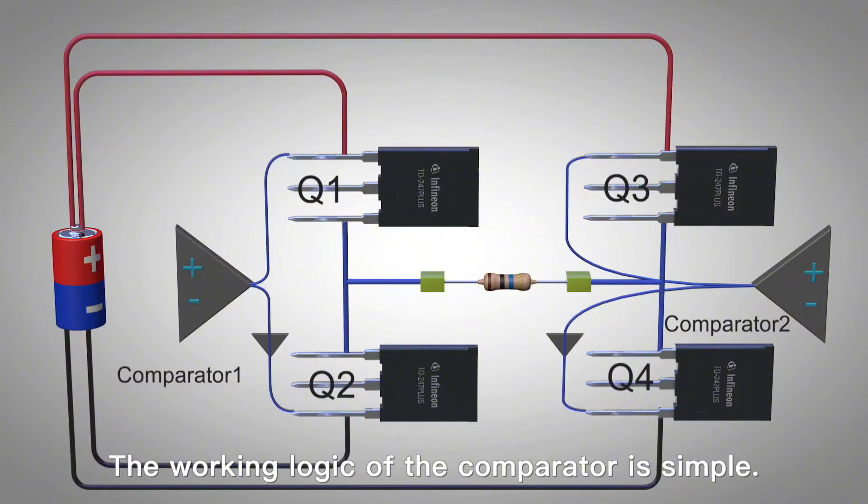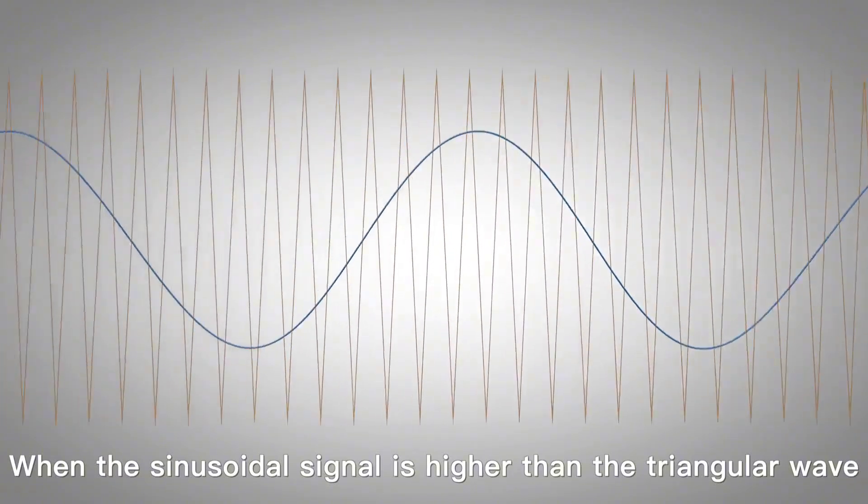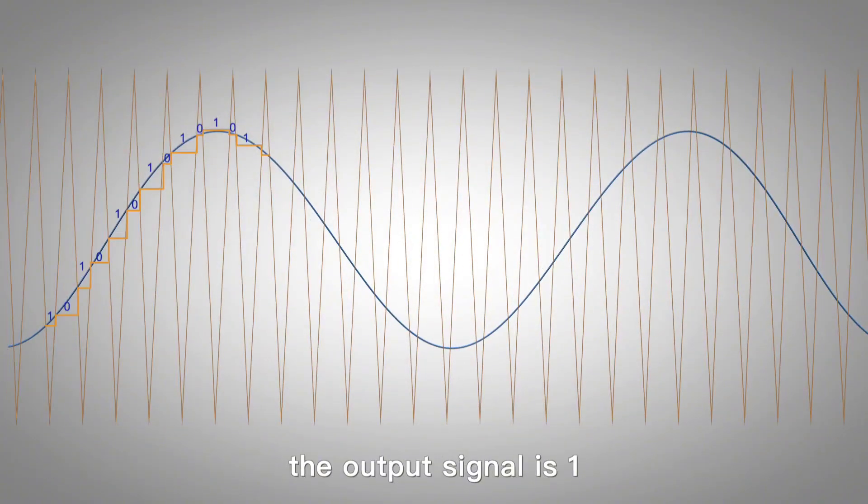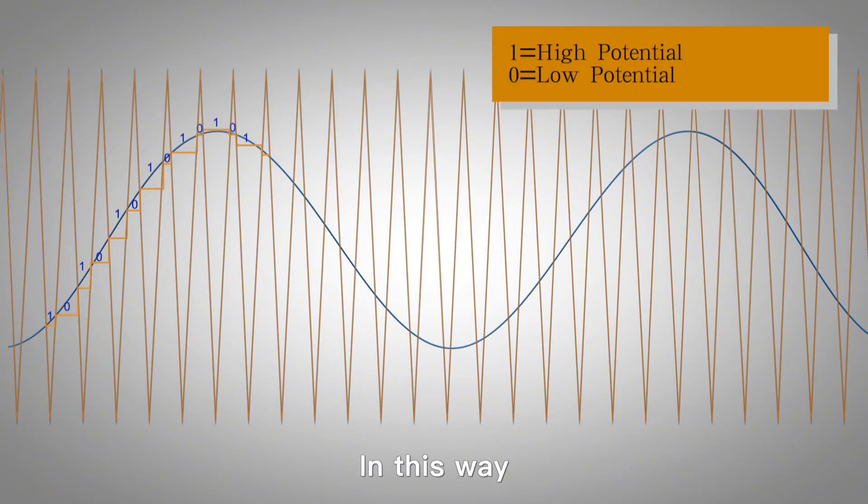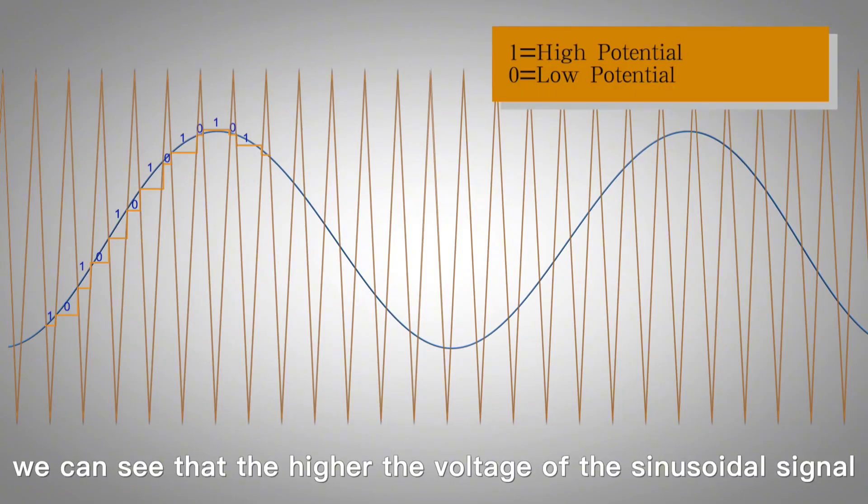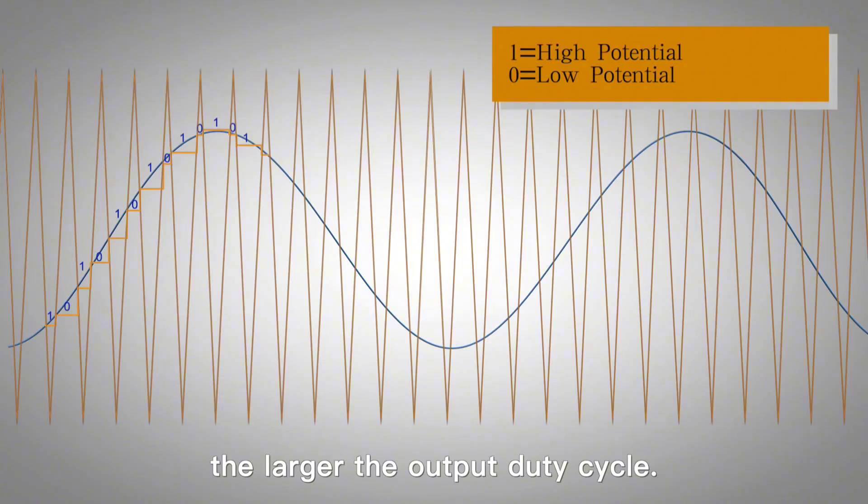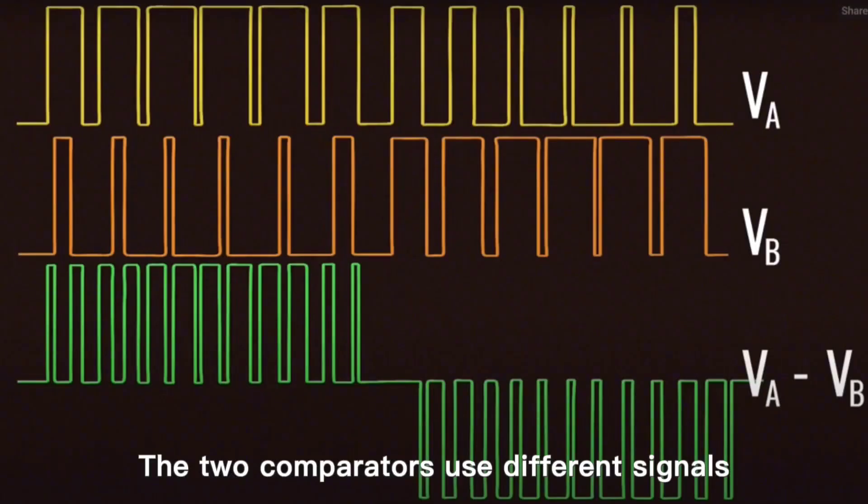The working logic of the comparator is simple. When the sinusoidal signal is higher than the triangle wave, it outputs signal 1, otherwise it outputs signal 0. So the higher the voltage of the sinusoidal signal, the greater the duty cycle of the output. The voltage on both sides is the difference between the two signals, and the waveform shown is obtained.